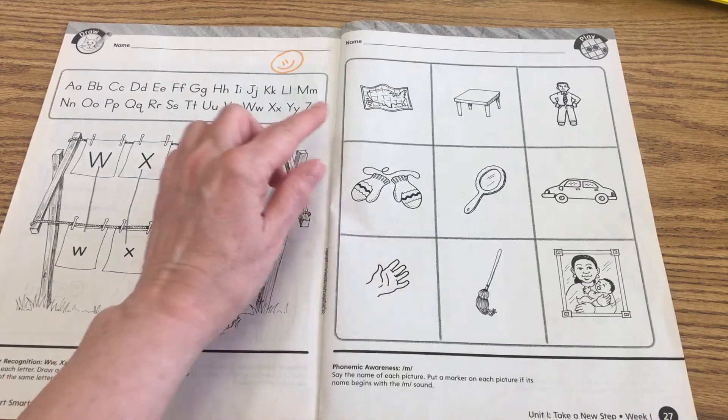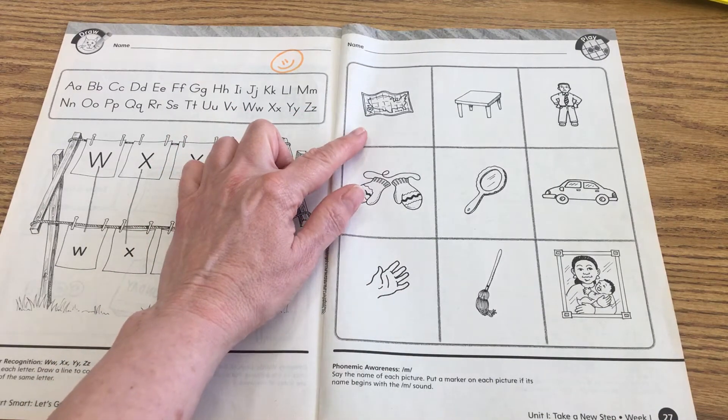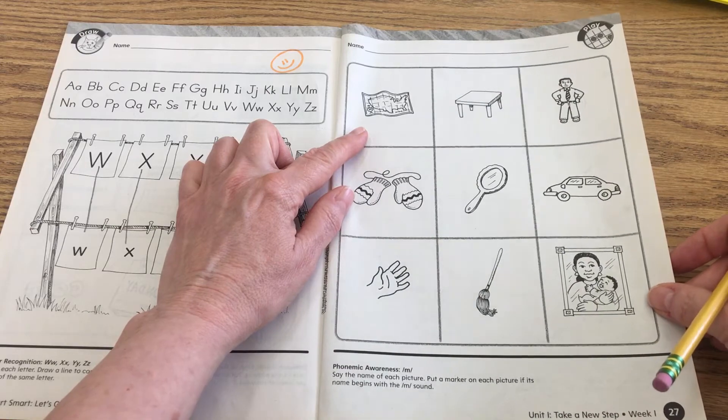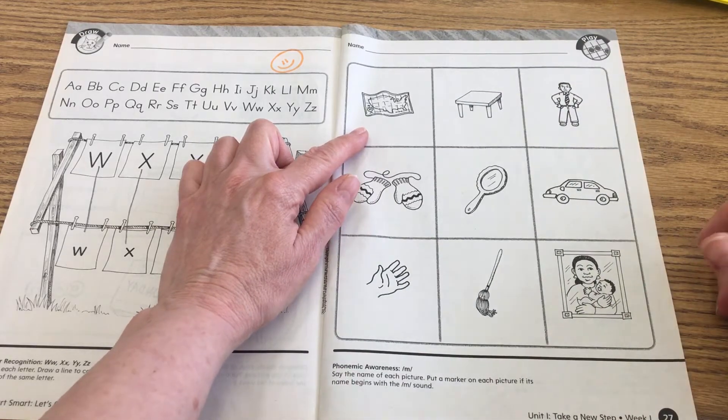So we're going to look at this page right here. It is actually page 27. Okay, and we're going to start at the top. And if you think of, we want to think of things that make the mmm sound, like monkey mmm.